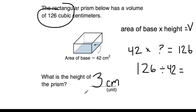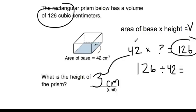Fifth graders, you're used to seeing problems where you're given one of the multiplication facts and you're missing the other, and you have the answer. You know that just means to take your answer and divide it by the fact that you know to get the missing value. Same thing here.